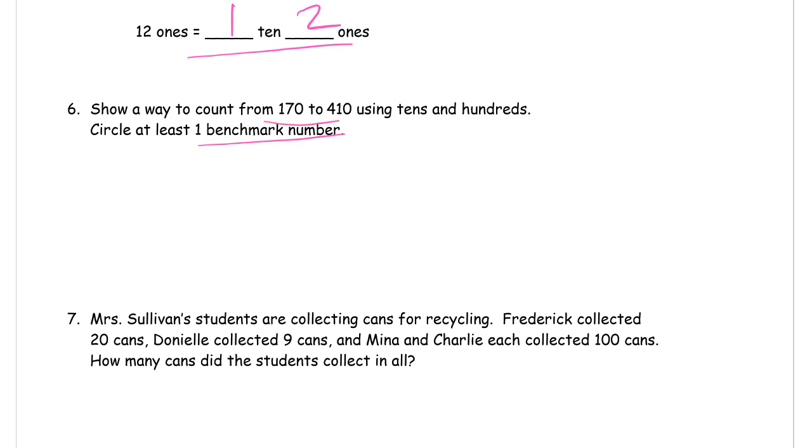Show a way to count from hundred seventy to four hundred ten using tens and hundreds. Circle at least one benchmark number. So the benchmark numbers are the ones where we change the units we're counting by. For the hundred seventy we can start with, we're going to start with tens: one hundred eighty, one hundred ninety, then two hundred. So there's a benchmark number because now we're going to start counting by hundreds: three hundred, four hundred. We're almost there. And now four hundred ten, and since we started counting by tens again we can circle that and call it a benchmark number.